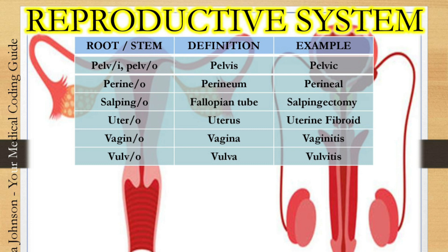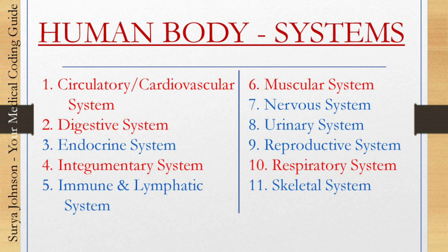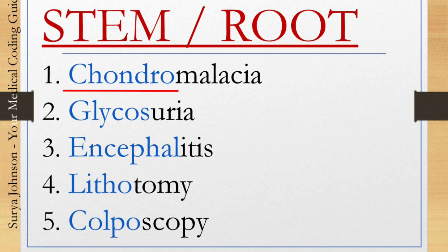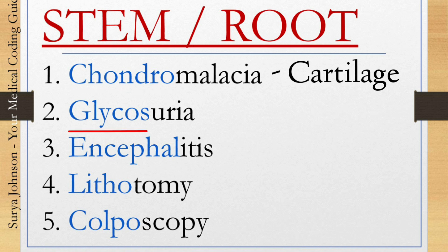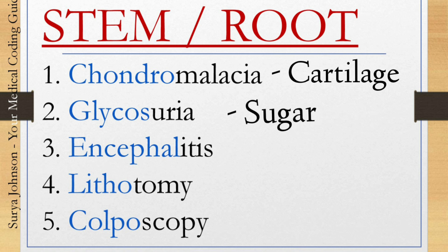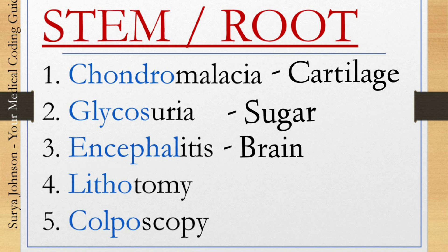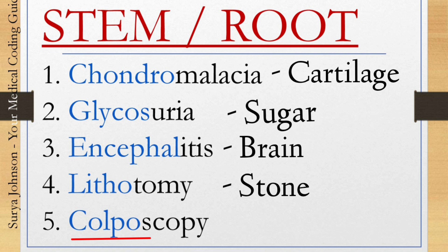Now we have learned all the stem and root words in medical terminology based on the human body system. Shall we have an assessment? What does chondro mean in the word chondromalacia? You are right. What does glyco mean in the word glycosuria? Absolutely right. What does encephalo mean in the medical term encephalitis? Correct. What does litho mean in the word lithotomy? Absolutely right. What does colpo mean in the word colposcopy? Correct.